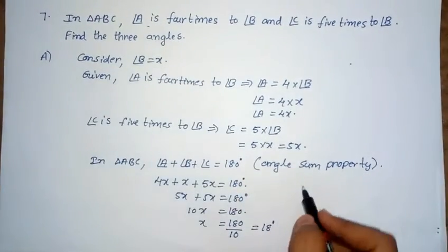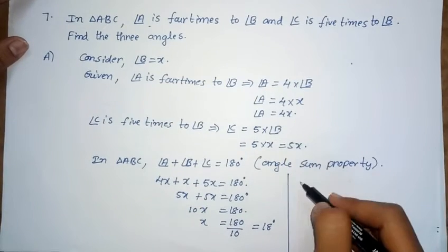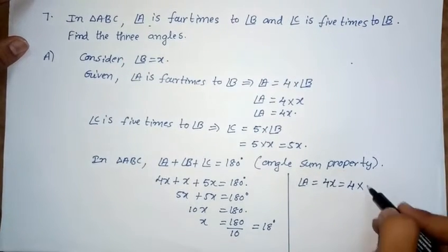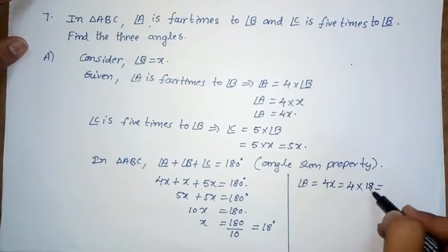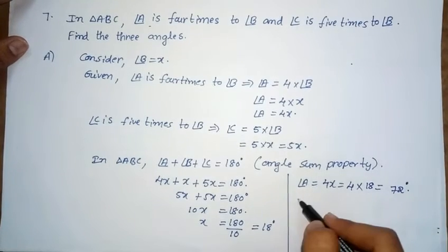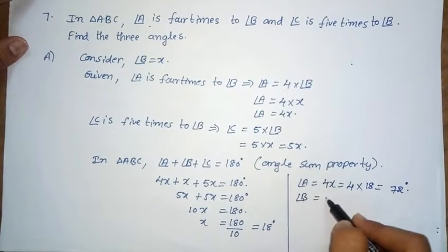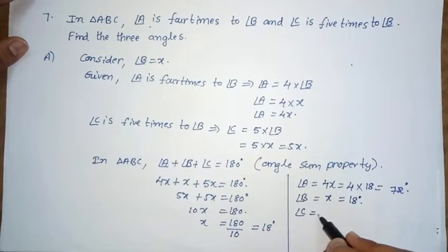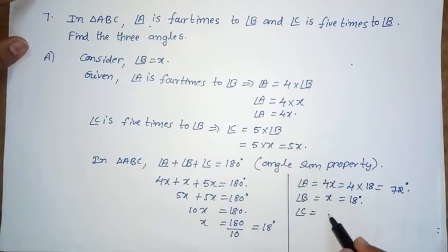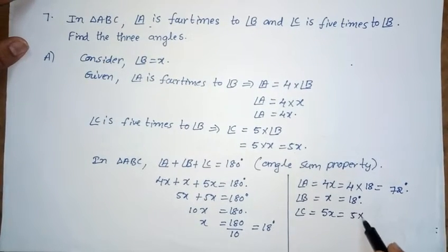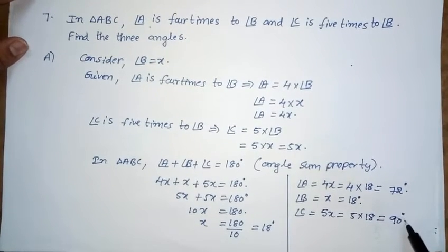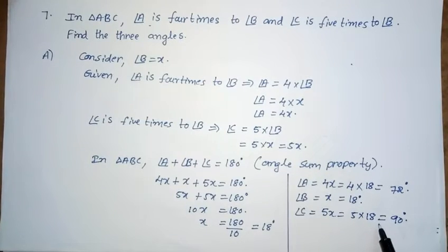In the problem they are asking to find the 3 angles. Angle A equals 4X, so 4 into 18 equals 72 degrees. Angle B equals X, so angle B equals 18 degrees. Angle C equals 5X, so 5 into 18 equals 90 degrees. So these are the 3 angles in the triangle. This is the solution for the 7th problem.